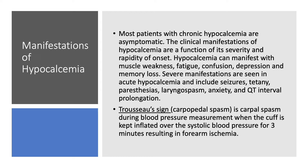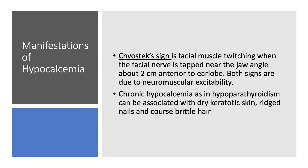Trousseau sign and Chvostek sign — everyone has studied these in med school. Trousseau sign is carpopedal spasm: we put the blood pressure cuff on the upper arm, keep it inflated over systolic blood pressure for three minutes, causing forearm ischemia, and if you have hypocalcemia, you will have carpopedal spasm. Chvostek sign is facial muscle twitching — if we tap the facial nerve near the jaw angle, about two centimeters anterior to the earlobe, we get facial muscle twitching. Both signs indicate neuromuscular excitability due to hypocalcemia.